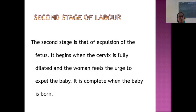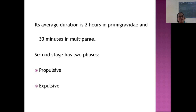The second stage of labor is that of expulsion of the fetus. It begins once the cervix is fully dilated and the woman feels the urge to expel the baby, and it is completed when the baby is delivered. Its average duration is 2 hours in primigravida and 30 minutes in multigravida. It has two stages: the propulsive stage and the expulsive stage.